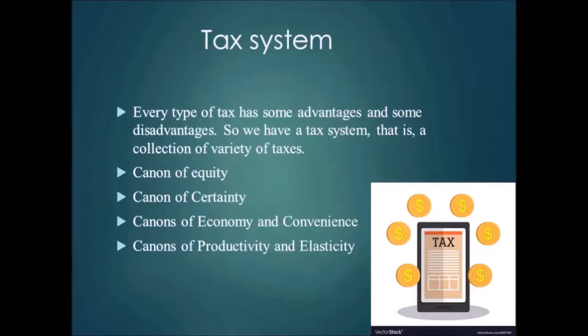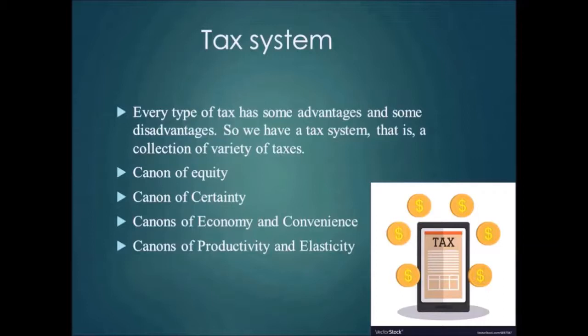The first canon of taxation is the canon of equity. Since tax is a compulsory payment, all economists agree that equity is the cardinal principle in designing the tax system. The rich should pay more tax revenue to the government than the poor, because the rich have more ability to pay. The canon of equity implies that the burden of taxation must be distributed equally or equitably in relation to the ability of the taxpayer.